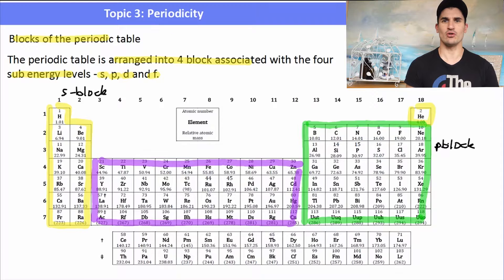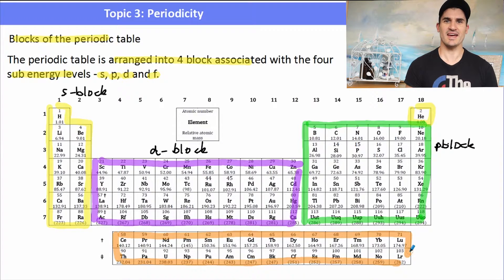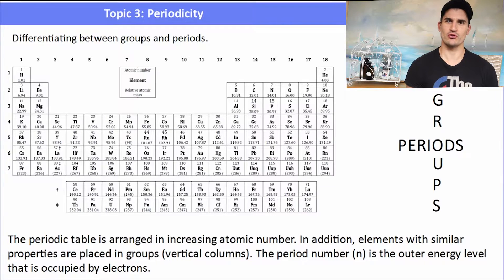The F subshell - well, that's the lanthanides and actinides, and they have 14 electrons that can be filled in the F block, so they can have 14 different electrons placed into that subshell. We need to know how to differentiate between groups and periods.